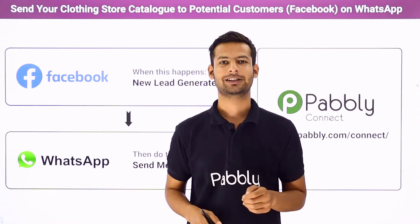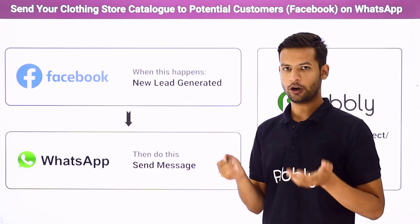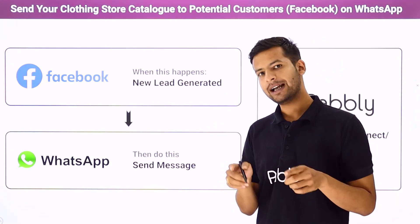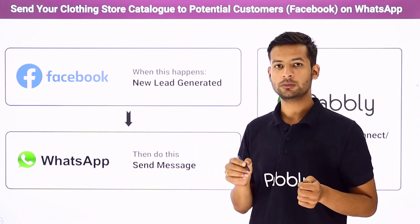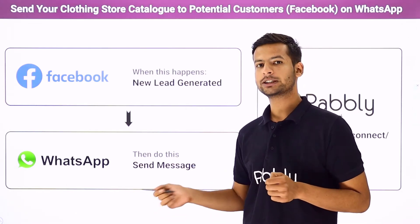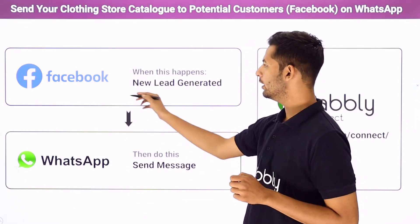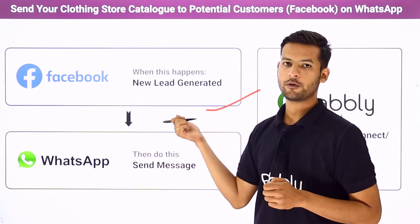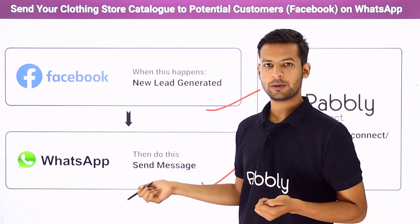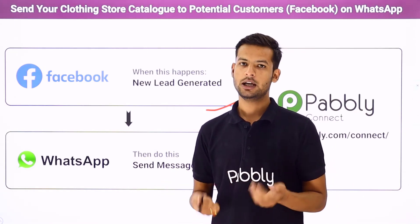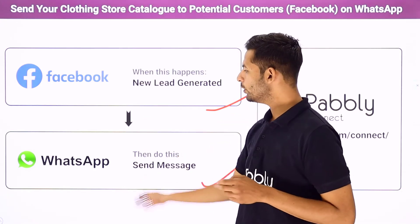To save your time, I suggest bringing automation here. You want something like: as soon as a customer or new lead has clicked the advertisement, a form will automatically appear. On successful submission of the form, they will automatically receive a WhatsApp message with the link of the catalog. For that, I have used two applications — Facebook for advertising, and WhatsApp to send the message and catalog link to customers.